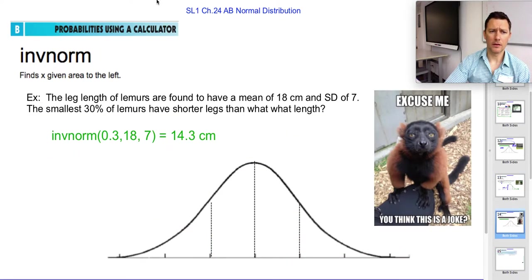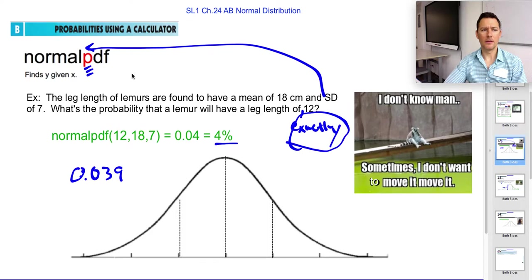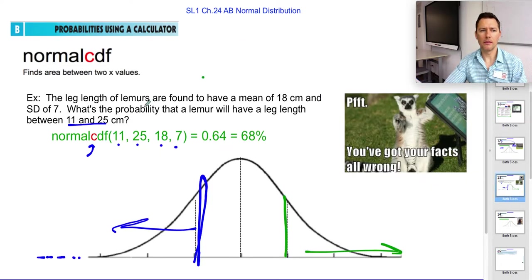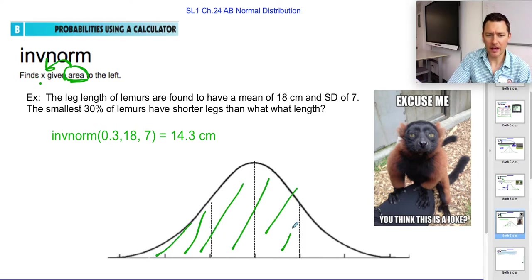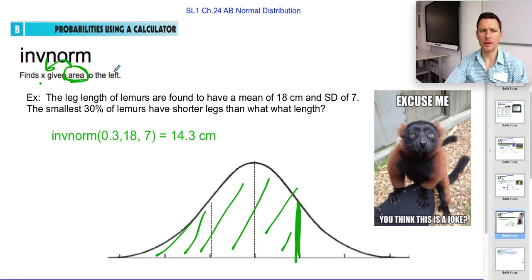Inverse normal goes backwards. It means if you're looking, if you have the area, you know the probability, it gives you the x. Rather than these, they give you the probability. These say what's the probability. If you know the x's, it'll give you the probability. Here, you have to know the probability, the area, and it gives you the x. So leg length of lemurs are found to have a mean of this and a standard deviation of that. The smallest 30% of lemurs have shorter legs than what length? An inverse normal always gives you the area to the left of a specific site. And that's not necessarily intuitive, but it's always to the left of the site that it gives you.